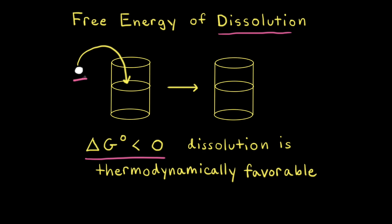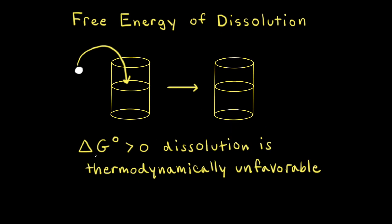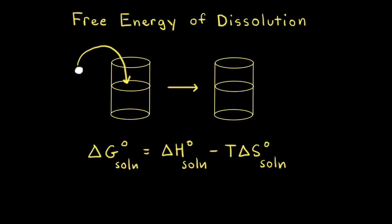So if we were to put this substance in a solvent like water, the substance would dissolve and it would form a solution. However, if delta G-naught is greater than zero, the dissolution is thermodynamically unfavorable, so if we tried to dissolve the substance in water, it wouldn't dissolve and we would just see it on the bottom of the beaker. Since we're talking about potentially making a solution, sometimes you see a subscript S-O-L-N written next to delta G-naught, so this would be delta G-naught of solution.